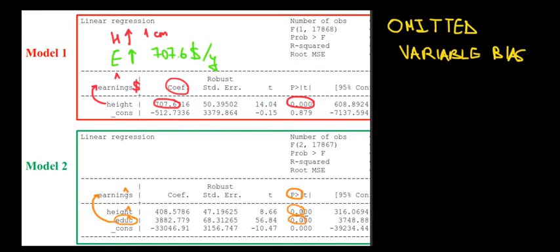But notice now the coefficients: the effect of height is 408. So now if we interpret that, it means that when height increases by one centimeter, then earnings go up by only 408 dollars per year.